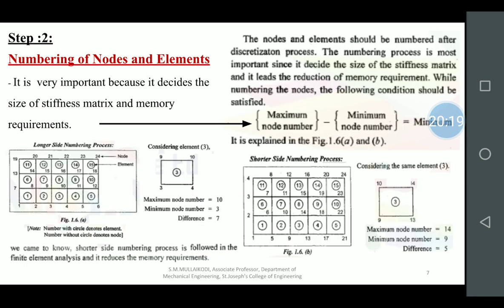Numbering the nodes: it is not very important when solving problems with only two or three elements. If you take figure 1.6a, nodes are numbered row-wise; in figure 1.6b it is column-wise numbering. The condition is that the maximum node number minus the minimum node number should be minimum. Column-wise numbering satisfies this condition because it consumes less memory space. For theoretical problem solving, we need not worry much about this.